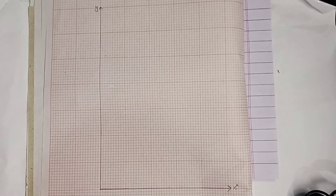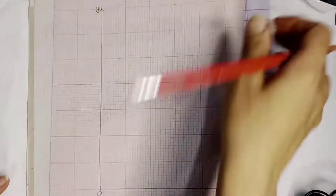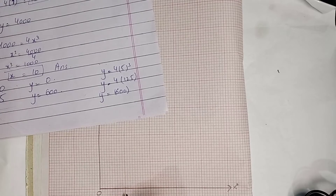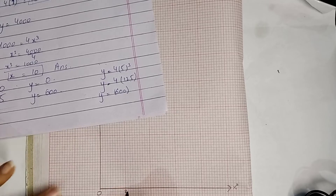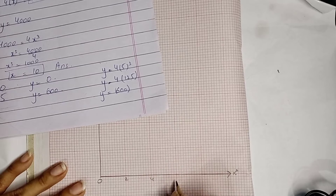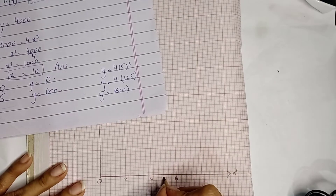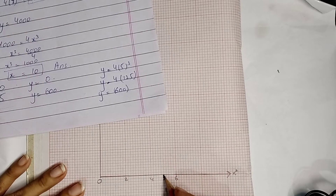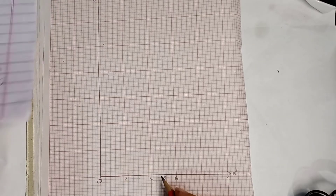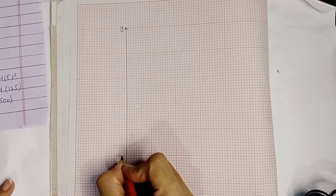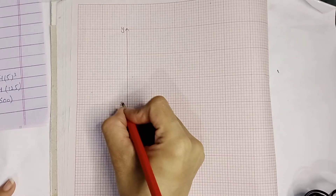For the graph, start with x on the horizontal axis and y on the vertical axis. On the x-axis, mark up to 5 — this is the middle value since we have 0 and 5. On the y-axis, take values in hundreds: each big block is 200, so mark 200, 400, 600, 800.